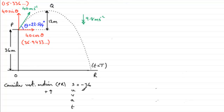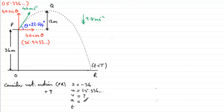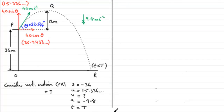The initial velocity u is upwards: 40 sin(theta) = 15.336 m/s. The final velocity v at R is unknown, so we leave it. The acceleration a is downwards due to gravity: minus 9.8 m/s². The time T is what we need to find.